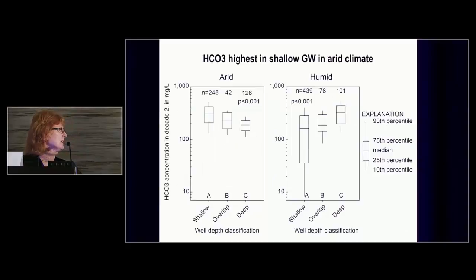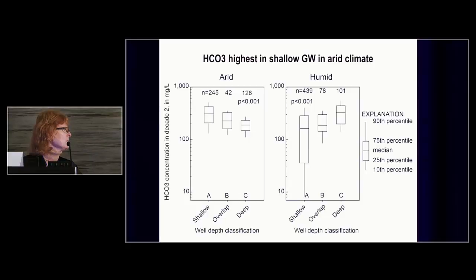Also consistent with the eastern San Joaquin Valley, in the arid environment bicarbonate concentrations are significantly highest in the shallowest groundwater and decrease with depth. In the humid environment, bicarbonate concentrations go in the opposite direction, suggesting some other process — possibly redox — is affecting bicarbonate in that area.